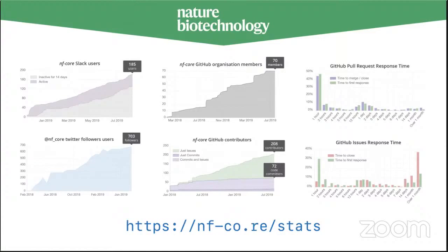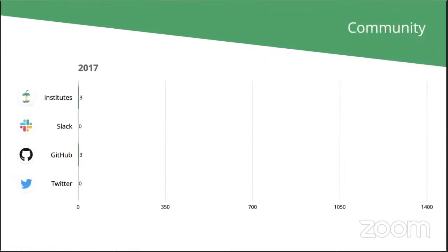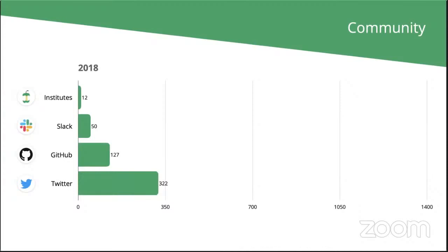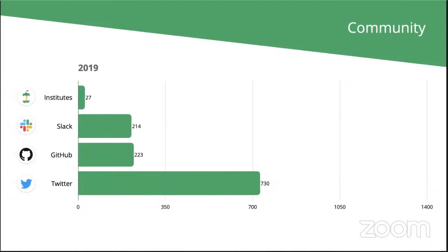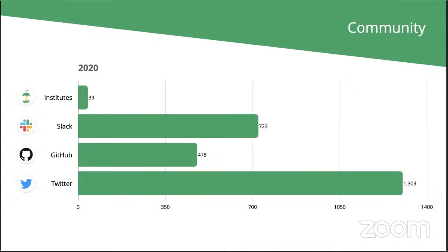You can see on these graphs that the NFCore community is really still going fast — we haven't plateaued and every single day we're getting more people using pipelines and contributing. Back in 2017 we were just three people, three institutes, three people on GitHub — that's when I created the NFCore GitHub organisation. Within a year things had already started to take off faster than I expected. Paolo, the main developer of Nextflow, had retweeted a couple of tweets and we started getting a following. By 2019 it was clear the project had a place in the bioinformatics community, and now in 2020 we're starting to have hundreds to thousands of people involved, with a massive Slack community.